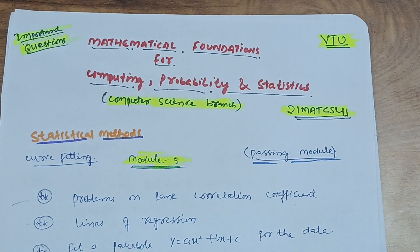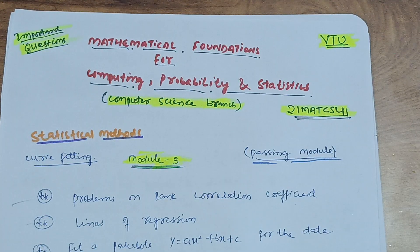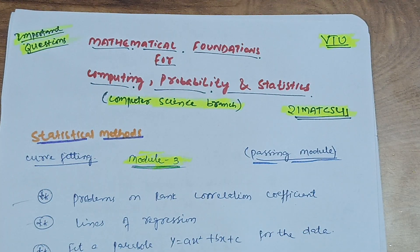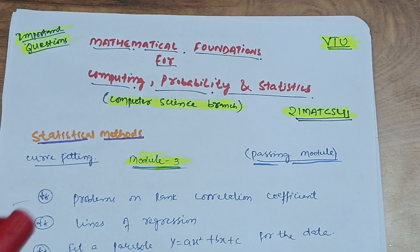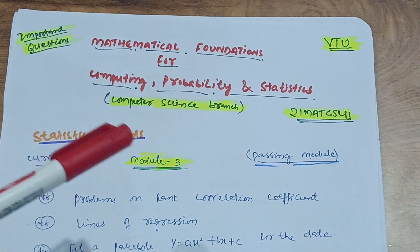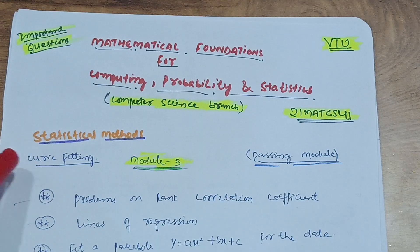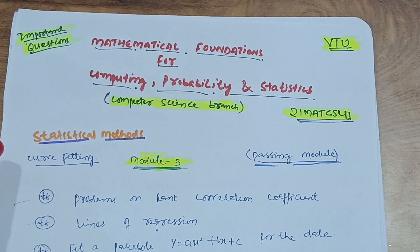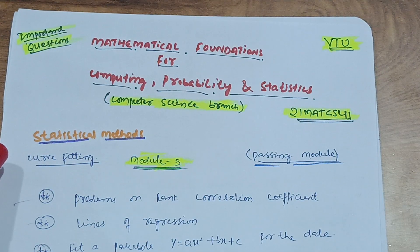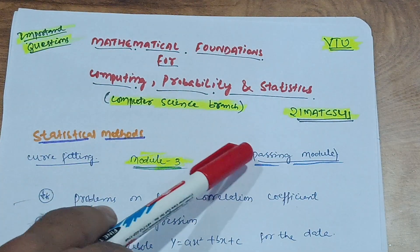Hello friends, welcome back. In this video I want to discuss some important questions related to M4 subject, which is Mathematical Foundations for Computing — probability and statistics. It is for computer science branch students. As you already know, VTU has changed the whole syllabus for each branch, and this time they have different subject codes like 21MAT CS41 for computer science.